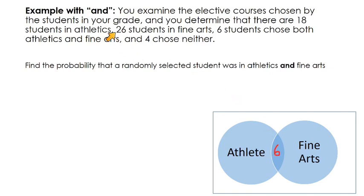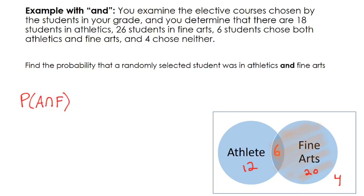Six students chose both athletics and fine arts, so they go in the intersection. There are 26 students in fine arts total, and that includes the six in the intersection, so there are 20 students solely in fine arts. For athletics: there are 18 total, 6 are also in fine arts, so 12 are only in athletics. And 4 chose neither. So the probability of athletics and fine arts is 6 successes out of 42 total outcomes — 12 plus 6 plus 20 plus 4 — which simplifies to one-seventh.